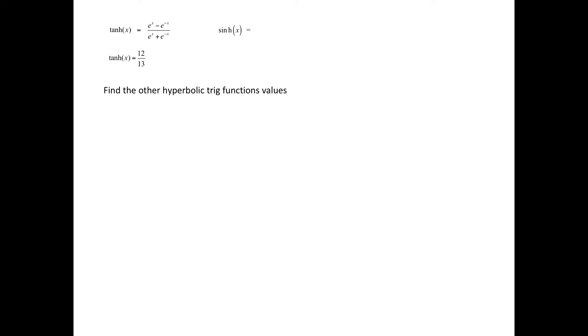Suppose we are told that the hyperbolic tangent function value for a given value of x is 12 thirteenths, and we are asked to find the other hyperbolic trig function values. We would need to find the hyperbolic sine, hyperbolic cosecant, hyperbolic cosine, hyperbolic secant — the hyperbolic tangent is given as 12 thirteenths — and the hyperbolic cotangent function value.